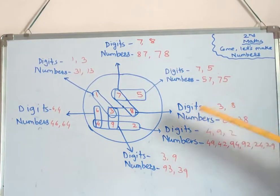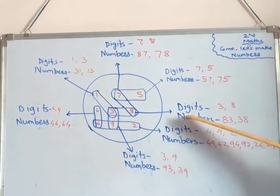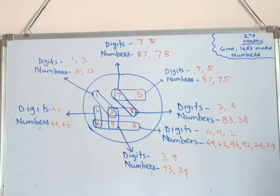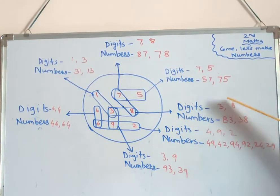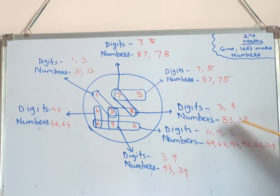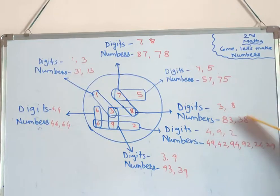Next digits are three and eight. Take three in the units place — eighty-three. Take eight in the units place — thirty-eight. So the two numbers made are 83 and 38.